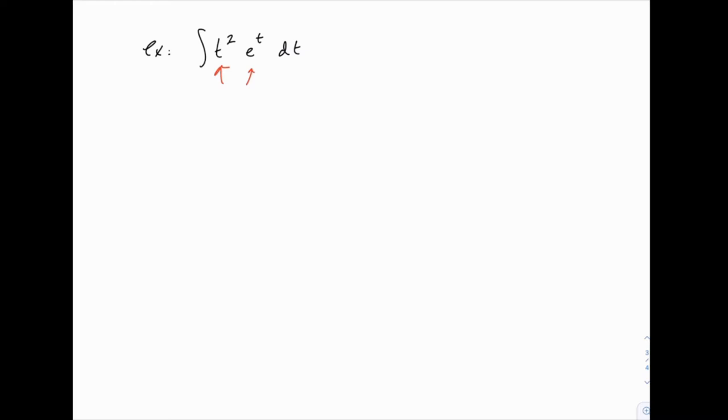Now we'll use the trick we talked about with LIATE. One of these, t squared, is a polynomial. The other one, e to the t, is exponential. So we have t squared here and we have e to the t here.